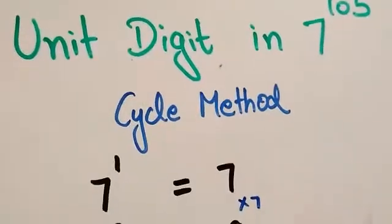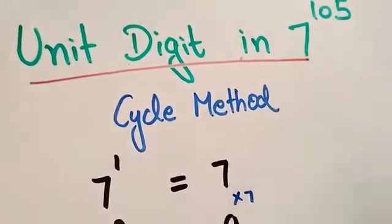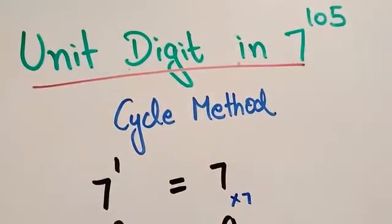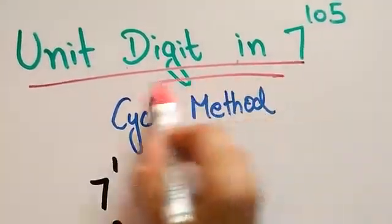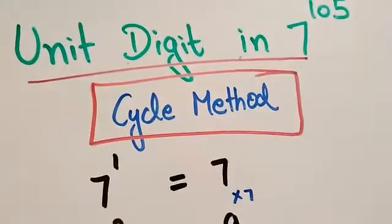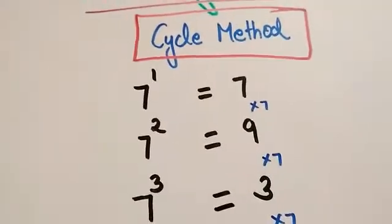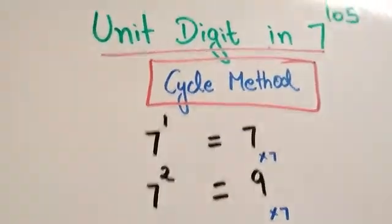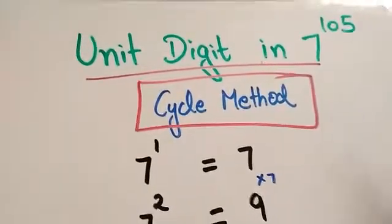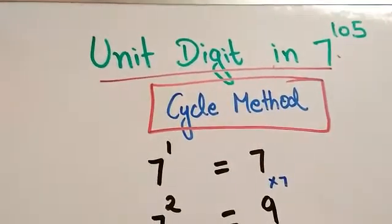To find out the unit digit in 7 raised to the power 105, we will use the cycle method. In the cycle method, you just have to calculate the cycle for 7.